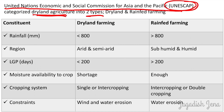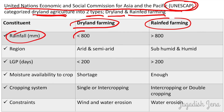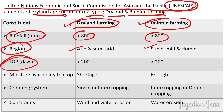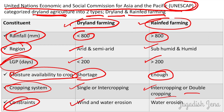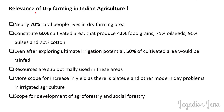According to UNESCAP (United Nations Economic and Social Commission for Asia and the Pacific), dryland agriculture is categorized into two types: dryland farming and rain-fed farming. If rainfall is less than 800 mm it is categorized as dryland farming; if more than 800 mm, as rain-fed farming. Dryland farming covers arid and semi-arid regions, while rain-fed farming covers subhumid to humid regions. Length of growing period is less than 200 days in dryland farming and more than 200 days in rain-fed farming. Moisture availability is short in dryland farming and adequate in rain-fed farming. Single cropping and intercropping are suitable for dryland farming; intercropping and double cropping for rain-fed farming. Wind and water erosion are constraints in dryland farming; mainly water erosion in rain-fed farming.